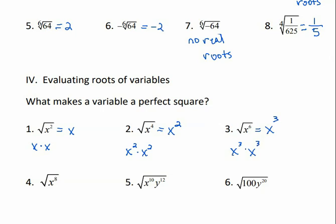There's a little pattern here. Remember, if it's the square root, you don't see a number in the pocket — it would be a 2, because we're multiplying two things together. So to take the square root of a variable with an exponent, we're dividing the exponent by 2. 2 divided by 2 is 1, 4 divided by 2 is 2, 6 divided by 2 is 3. So the square root of x to the eighth would be x to the fourth, because 8 divided by 2 is 4.